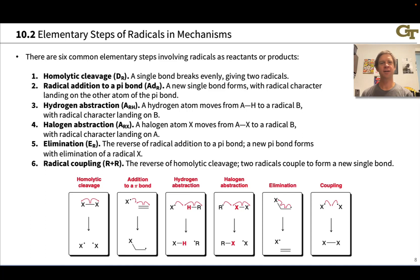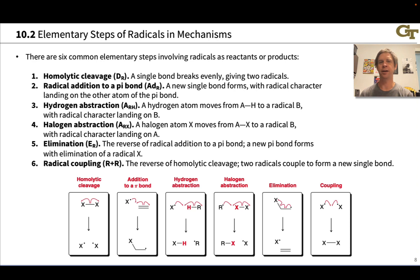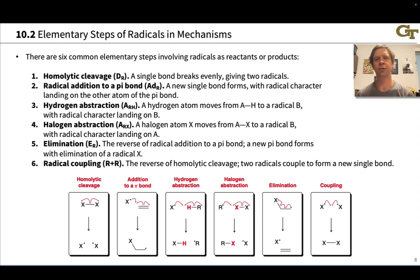As we move into talking about radical reactions and mechanisms, it's important to get a general idea of the types of elementary steps we'll see in radical mechanisms. They're fundamentally different in many ways from the elementary steps we see in ionic mechanisms. There are six common elementary steps that involve radicals as reactants or products. There's homolytic cleavage, which we've already seen.